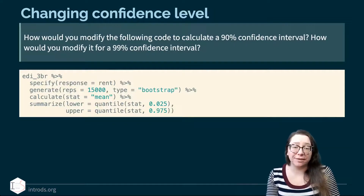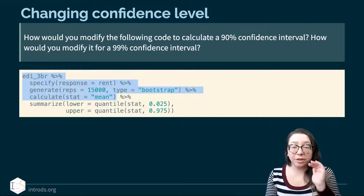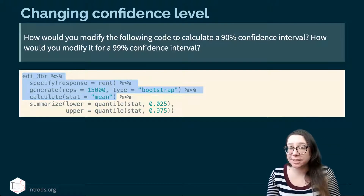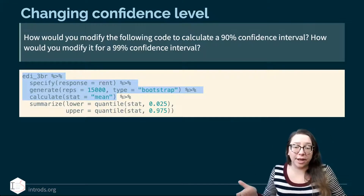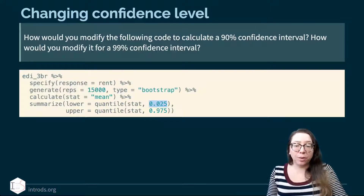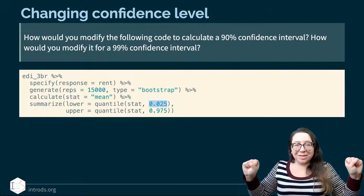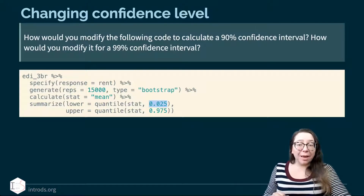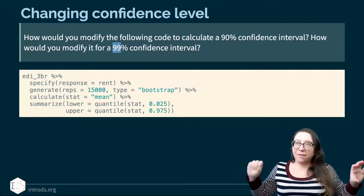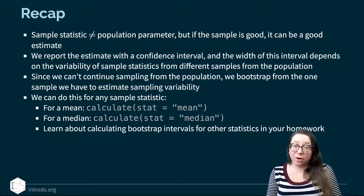In the code, how do we change our confidence level between 90% and 99%? The steps of specifying the response variable, generating bootstrap samples, and calculating statistics have nothing to do with the confidence level. The confidence level only affects where we draw those vertical lines — that's at the final step where we find the quantile. For a 90% confidence interval, we chop off 5% from each end — the 5th and 95th percentiles. For 99%, we chop off half a percent from each end.